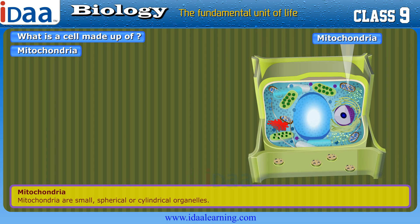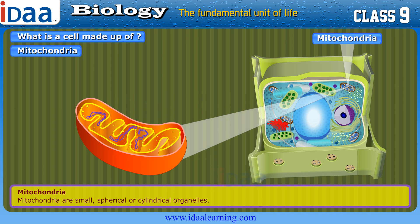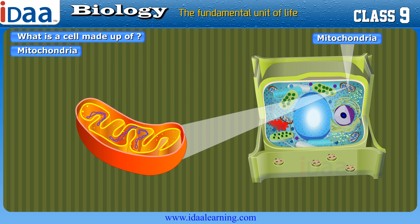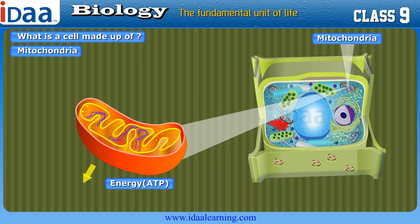Mitochondria are small, spherical or cylindrical organelles. They have two compartments — an outer compartment and an inner compartment — and two membranes, an outer membrane and an inner membrane. They have their own DNA and ribosomes, and are able to make some of their own proteins. Inside the cell, mitochondria use oxygen for respiration and energy production in the form of ATP. So they are called the powerhouse of the cell.